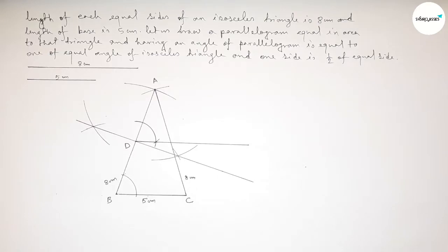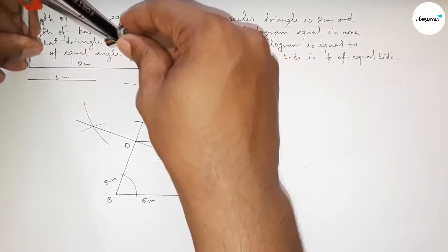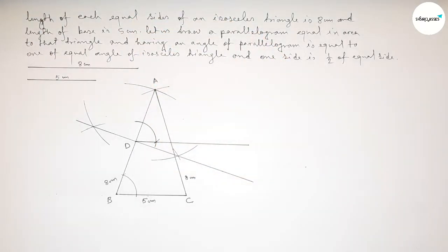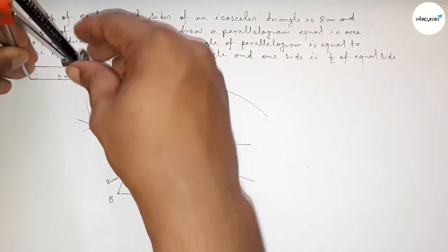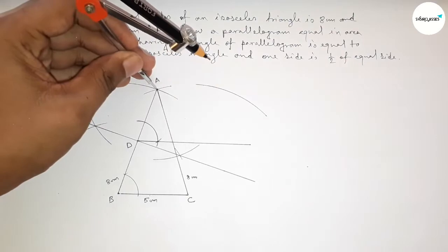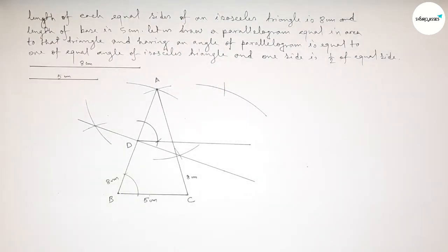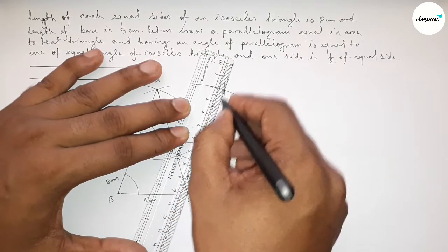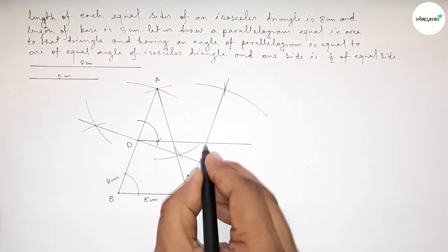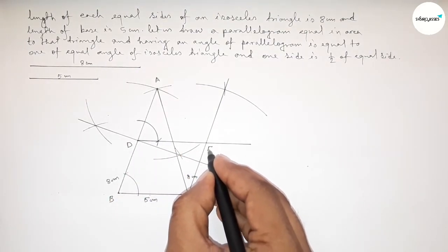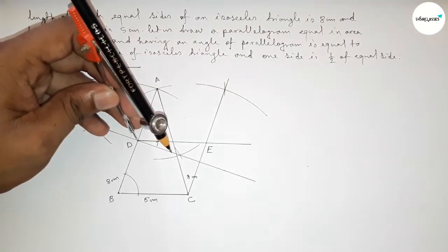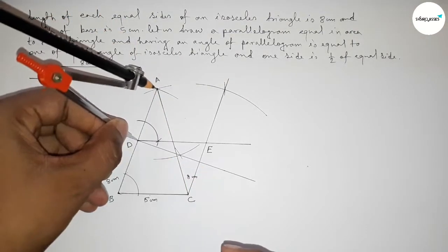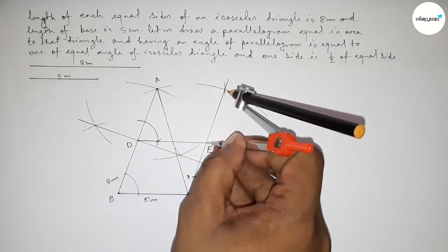Next, taking the length of 8 centimeters on the compass and placing it on point C, we draw an arc. Then taking the length of 5 centimeters on the compass and placing it on point A, we draw another arc. Both curves intersect at a point, which we mark as point E, and we join the line to complete that side of the parallelogram.